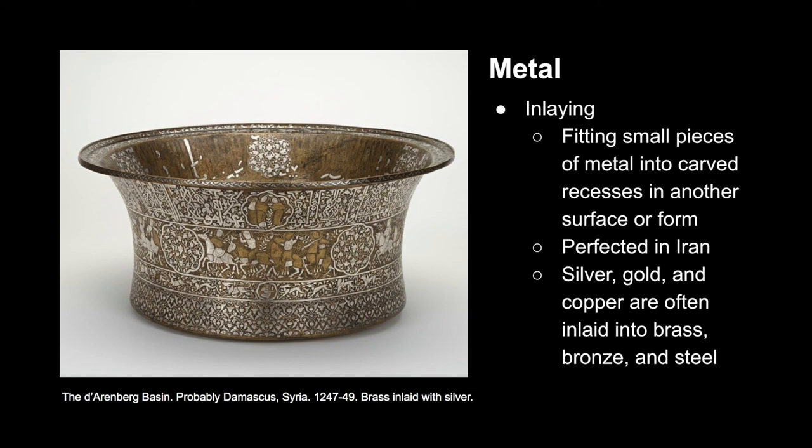Muslims in the Middle East were very proficient with inlaying. Inlaying is fitting small pieces of metal into carved recesses in another surface or form. The central hub where inlaying was perfected was primarily in Iran. Usually, silver, gold, and copper were inlaid into brass, bronze, or steel.